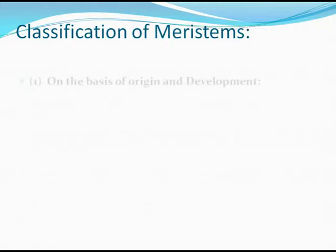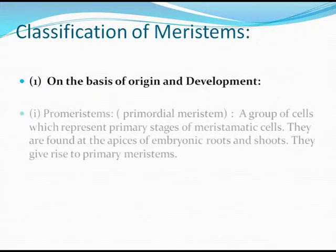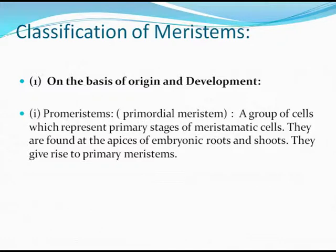Meristems have been classified under various aspects, beginning with origin and development. Promeristems, or primordial meristems, are a group of cells representing primary stages of meristematic cells. They are found at the apex or apices of embryonic roots and shoots, and give rise to the primary meristems.